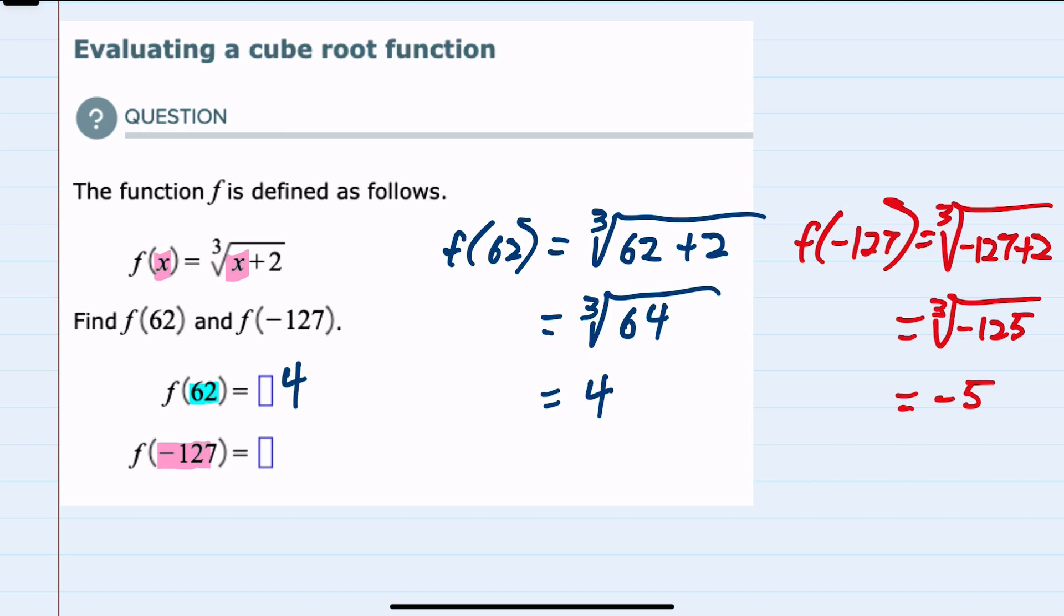So negative 5 times negative 5 would be positive 25, times another negative 5 would be negative 125. So our f of negative 127 is negative 5.